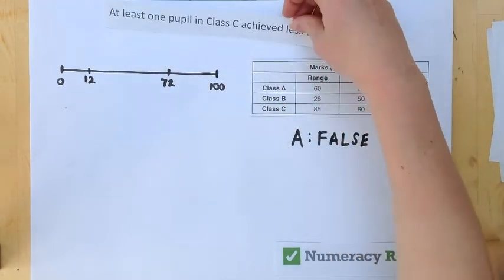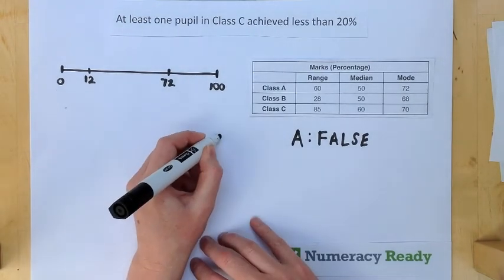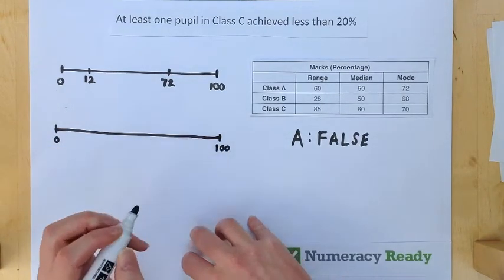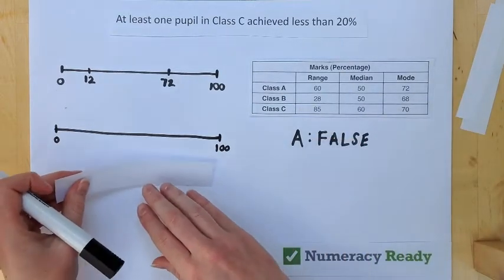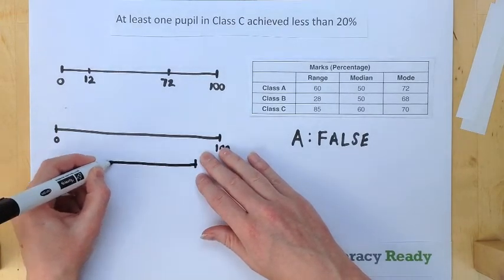Let's consider Statement B. At least one pupil in Class C achieved less than 20%. If we consider our scale and again take our range, you'll see for Class C they had a range of 85.